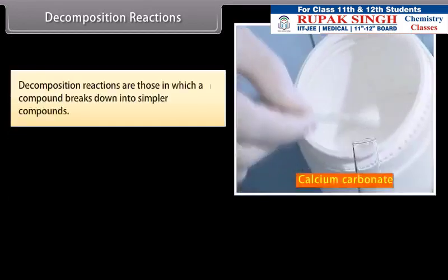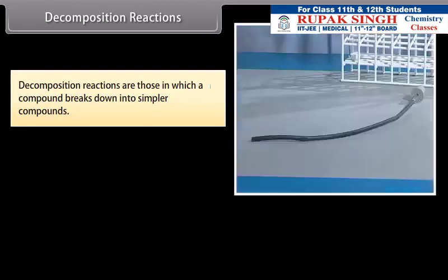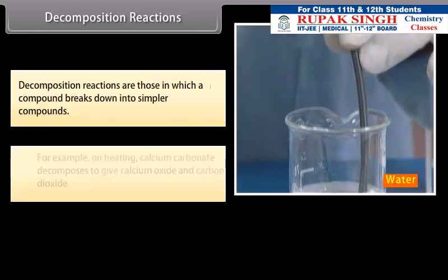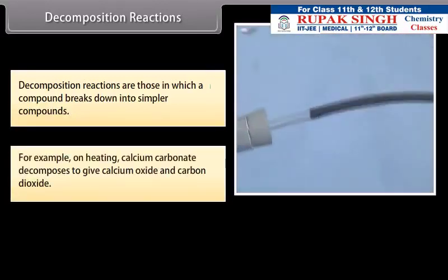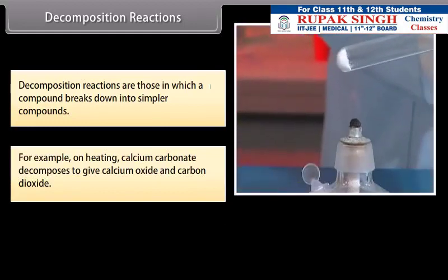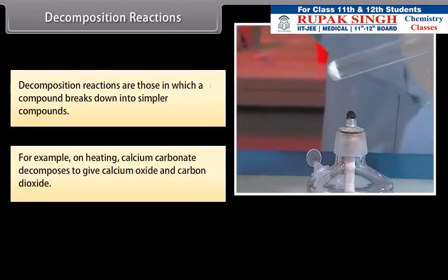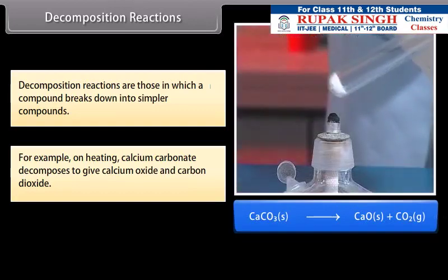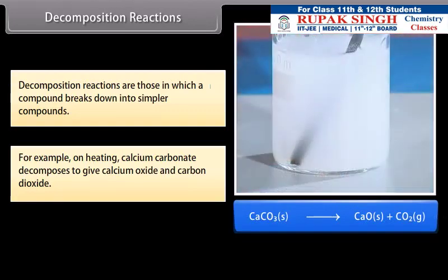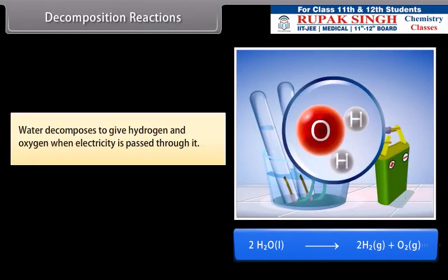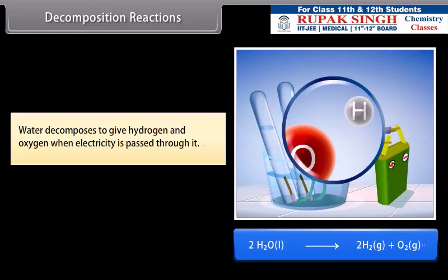Decomposition reactions: Decomposition reactions are those in which a compound breaks down into simpler compounds. For example, on heating, calcium carbonate decomposes to give calcium oxide and carbon dioxide: CaCO3 gives CaO plus CO2. Water decomposes to give hydrogen and oxygen when electricity is passed through it.